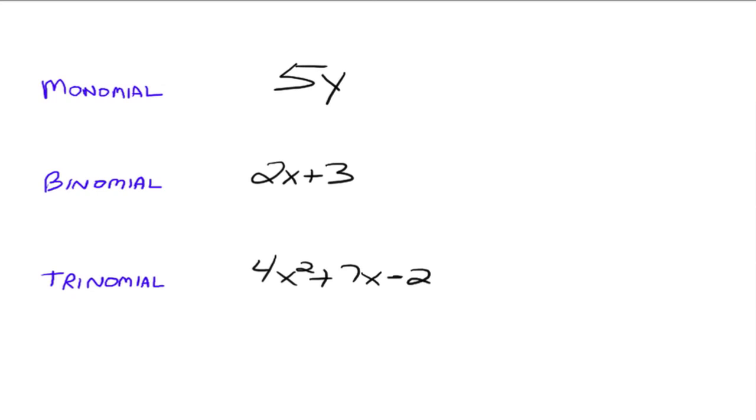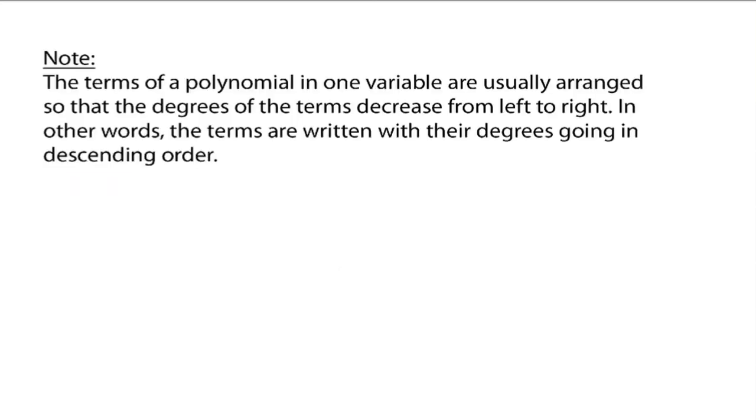Here's a note. There's a certain way we want to write our polynomials. The terms of a polynomial in one variable are usually arranged so that the degrees of the terms decrease from left to right. In other words, the terms are written with their degrees going in descending order. So as we go left to right, the degrees on the monomials get smaller.